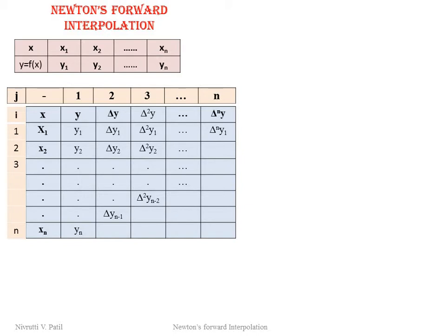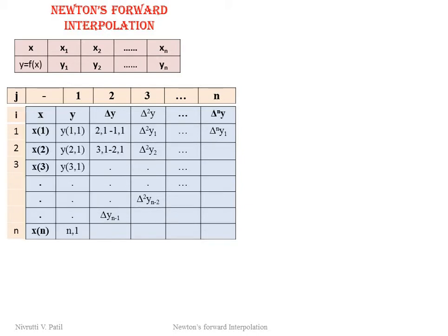The table can be written in terms of i and j: the first value is x(i), so x(1), x(2), up to x(n). For the y values we use both i and j, written as y(i,j). For the first row, i is 1 and j is 1, so we write y(1,1). For the second row, i is 2 and j is still 1, so y(2,1). The first forward difference is the next value minus the current value, so y(2,1) minus y(1,1), and so on.